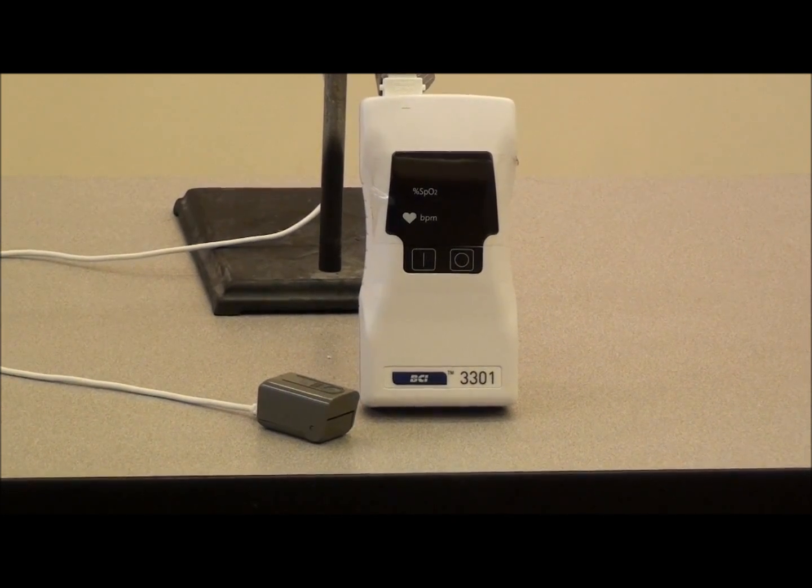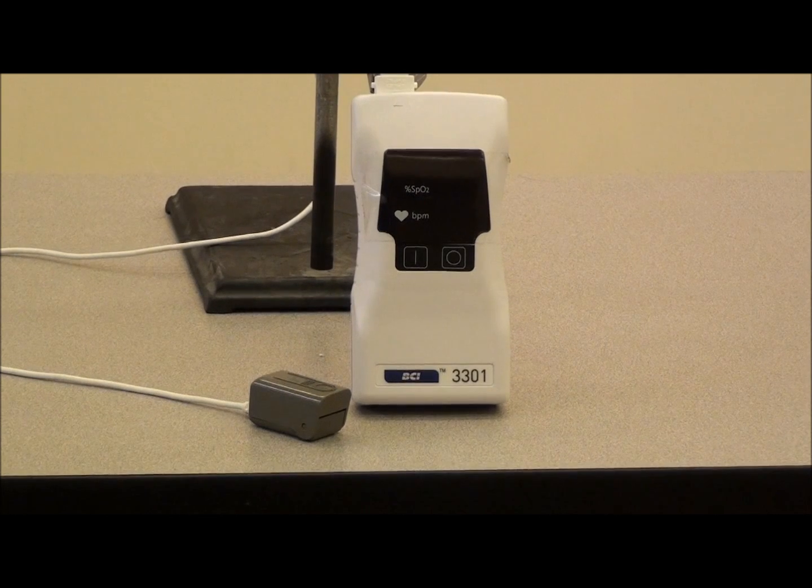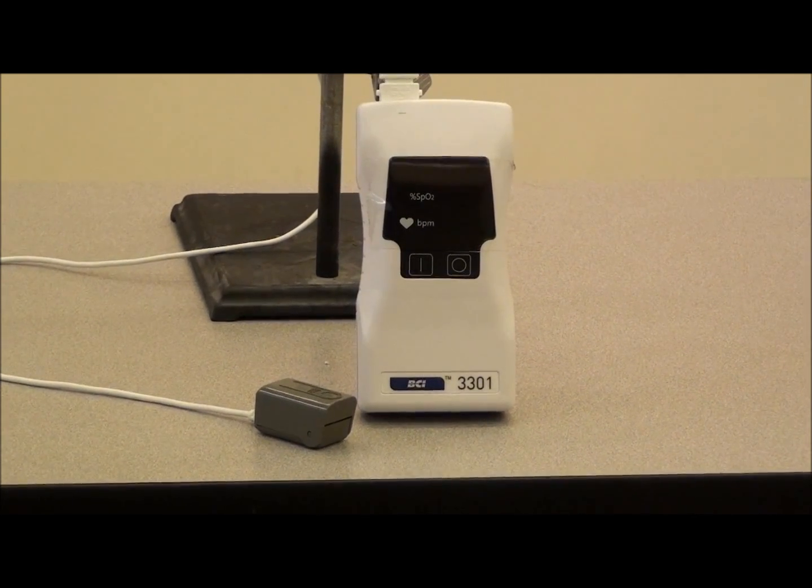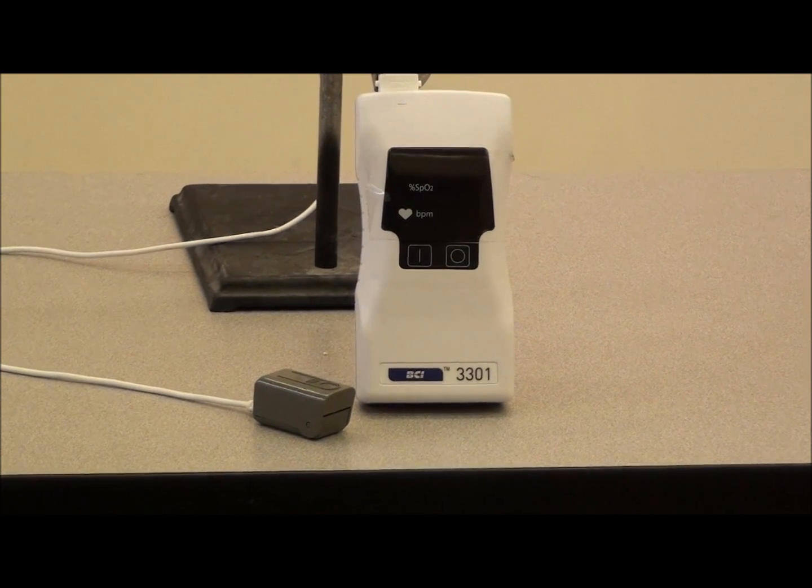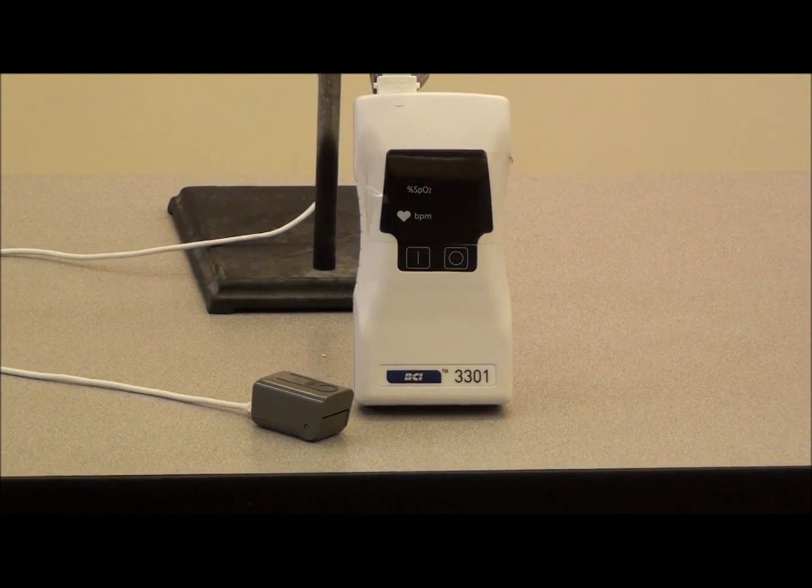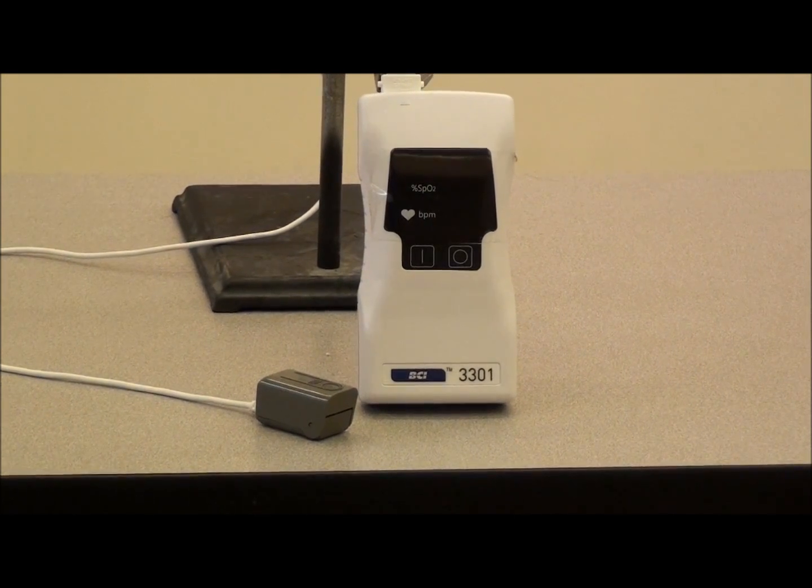Pulse oximetry is based on the fact that oxygenated hemoglobin has a different absorption spectrum for electromagnetic radiation than does deoxygenated hemoglobin. The technique uses a sensor or probe which can be placed on the digits, ears, nose, and even the forehead.